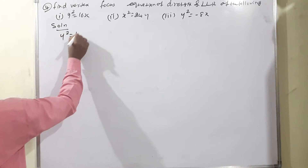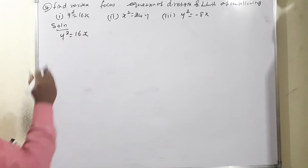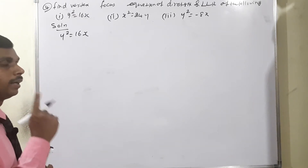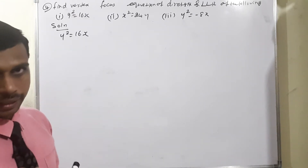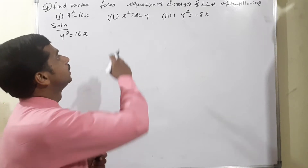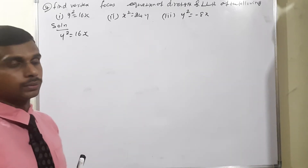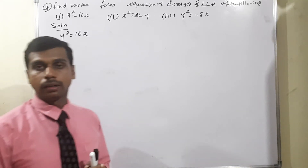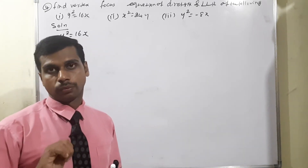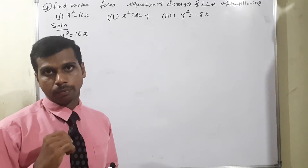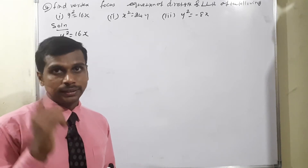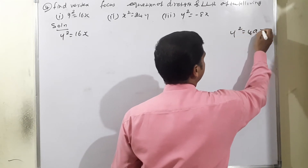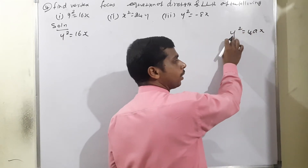Solution: y² = 16x. It's a parabola type — any one of the parts only is squared, whether x² or y². That's why we are saying this is a parabola. There are four types of parabola. The first one is right side open parabola, with condition y² = 4ax.